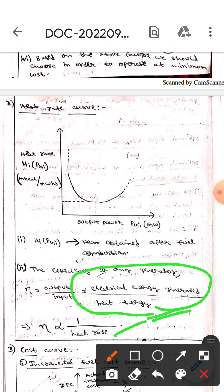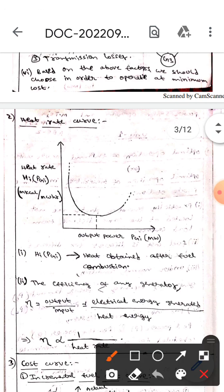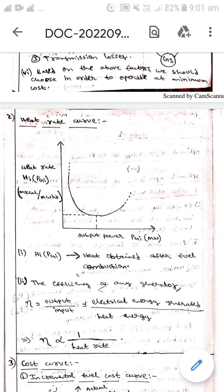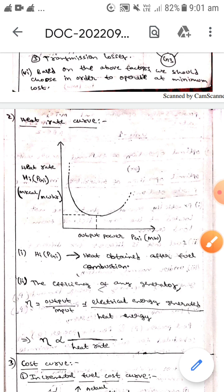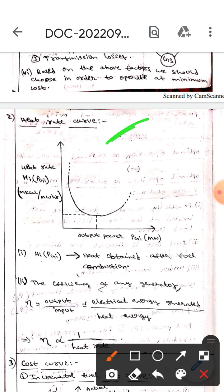can understand that efficiency is inversely proportional to heat rate. If the efficiency increases then the heat rate decreases, whereas if the efficiency decreases then the heat rate increases. This is all about the heat rate curve. I hope you understand guys, thank you.